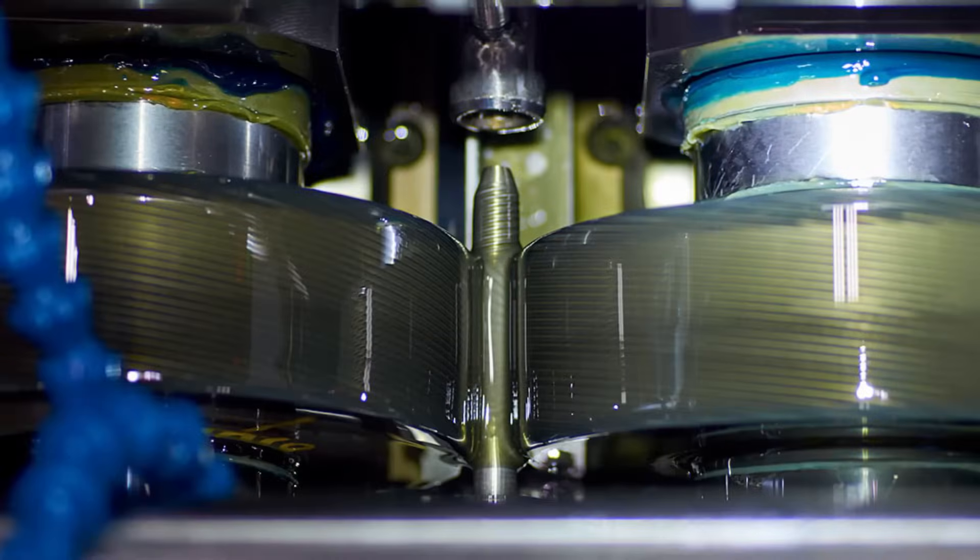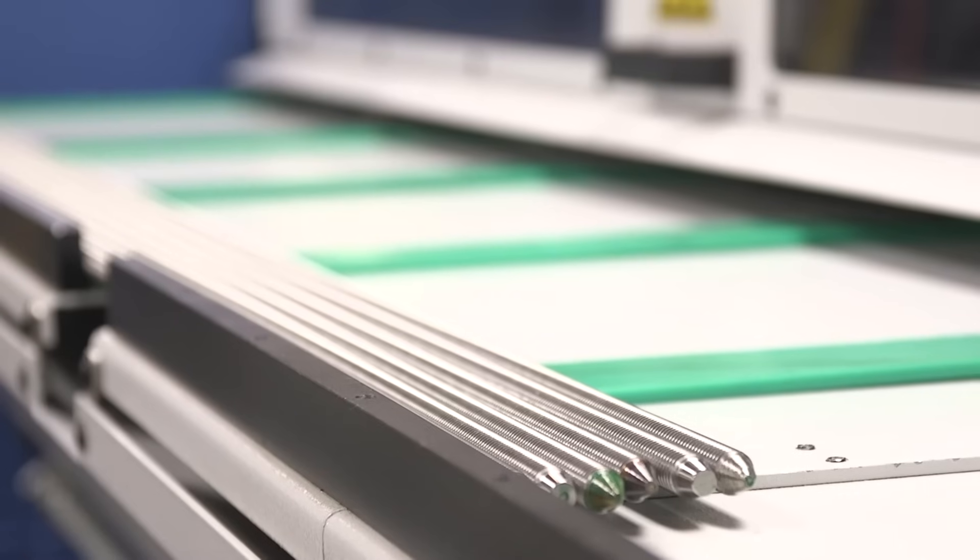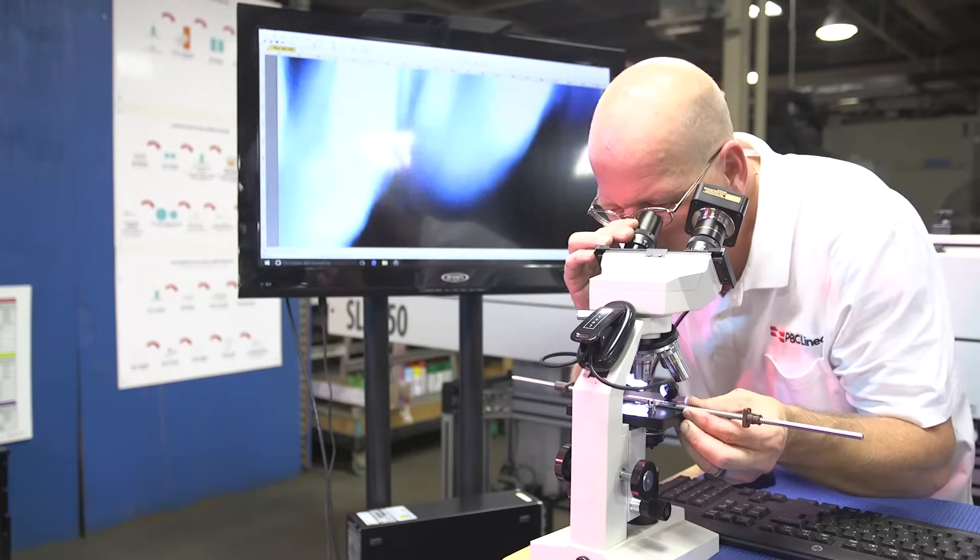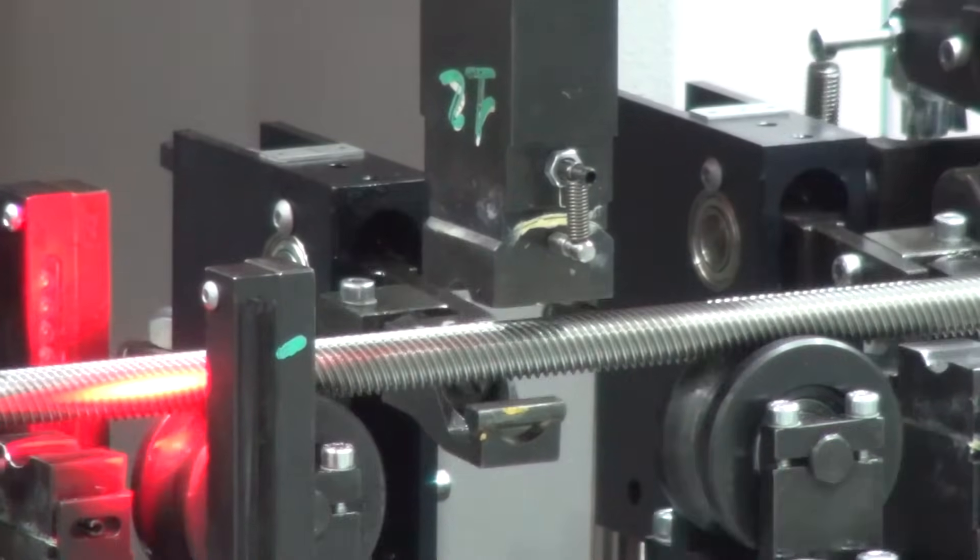The screws are rolled right here at PBC Linear. We hold tolerances of three thousandths of an inch per foot as far as the lead accuracy. That's three times better than the published specifications of leading competitors.